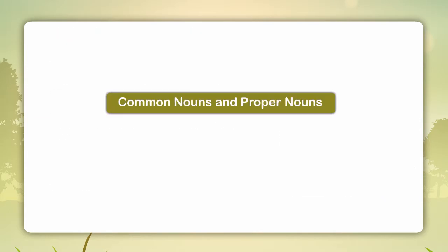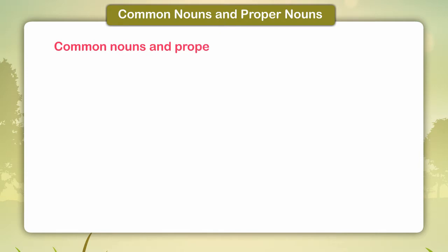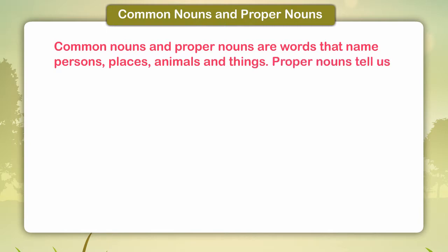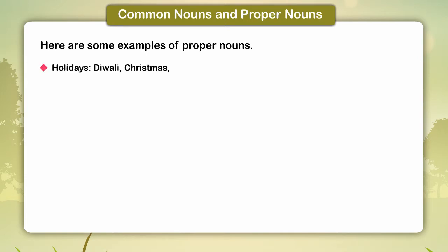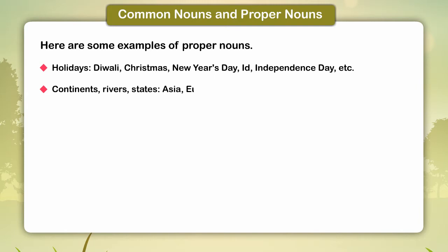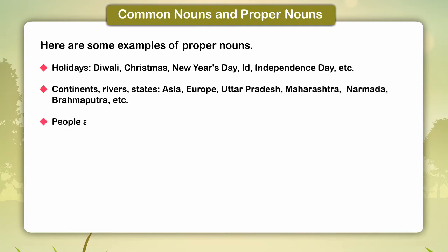Common nouns and proper nouns are words that name persons, places, animals, and things. Proper nouns tell us particular names of persons, places, animals, etc. Examples of proper nouns — Holidays: Diwali, Christmas, New Year's Day, Eid, Independence Day, etc. Continents, Rivers, States: Asia, Europe, Uttar Pradesh, Maharashtra, Narmada, Brahmaputra, etc. People and Pets: Krishna, Sita, Chetak, Alexander, Napoleon, etc.